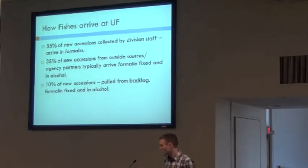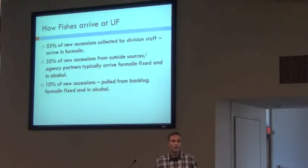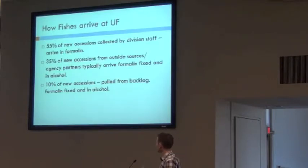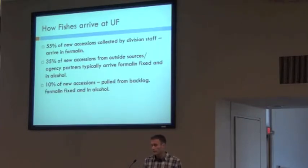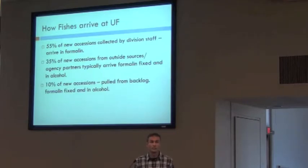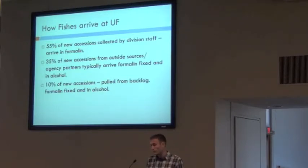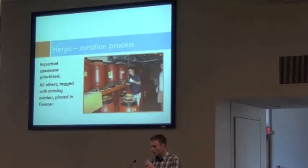For each of these collections, I thought it was interesting to poll the collection managers and ask how they're currently getting specimens being cataloged within the last year. For fishes: 55% of new accessions are collected by division staff; 35% are from outside sources, agency partners like the USGS, and they typically arrive fixed and in 70% alcohol; and 10% are being pulled from the backlog — things that have been around 40 or 50 years — cherry-picked, identified, and made available for research.